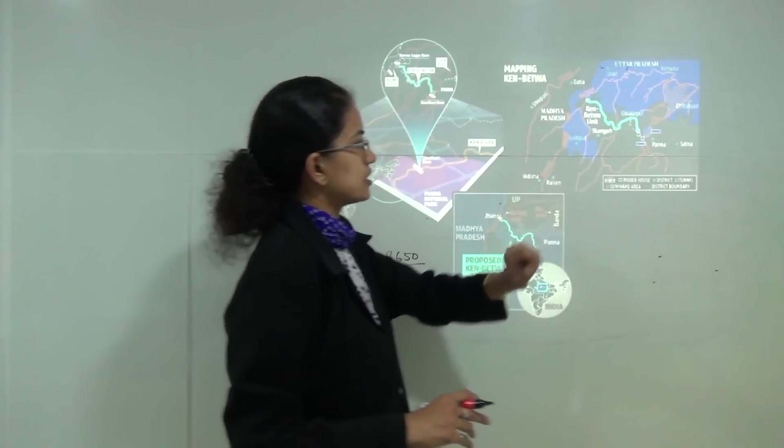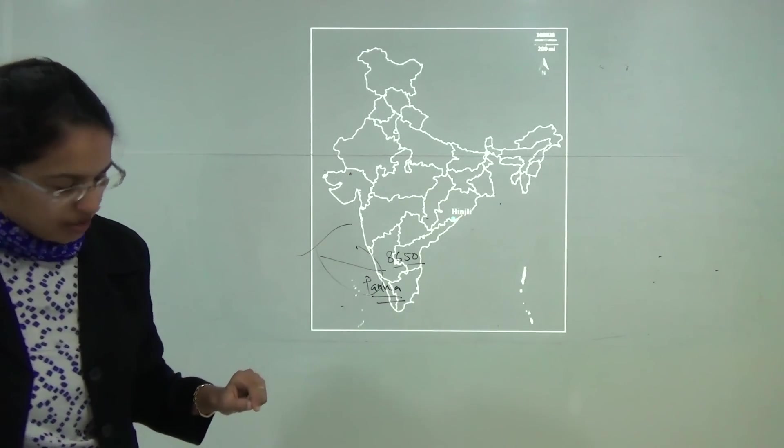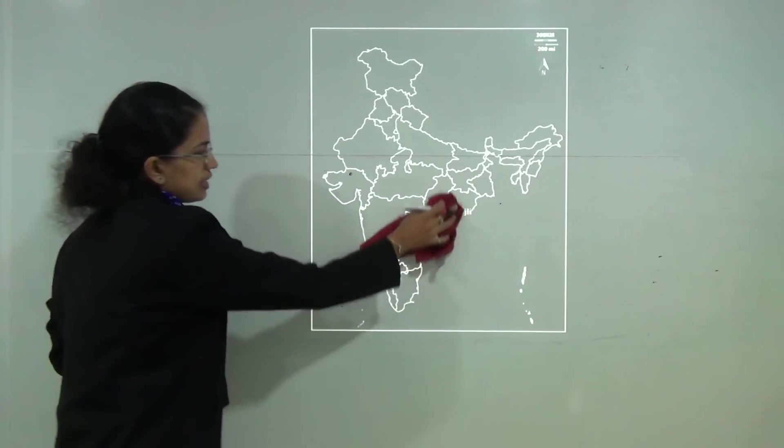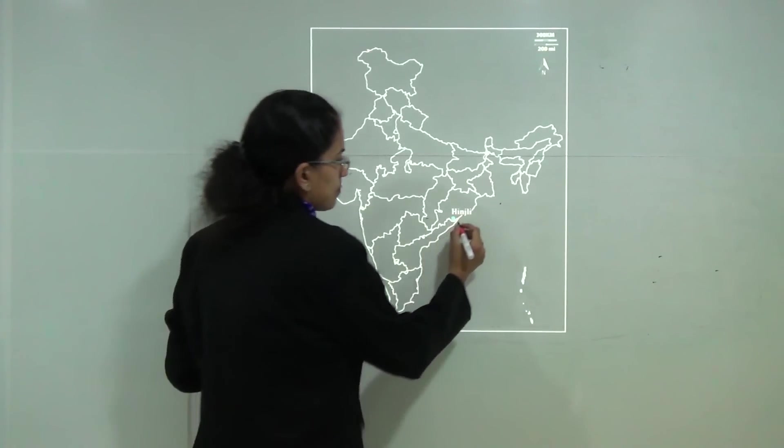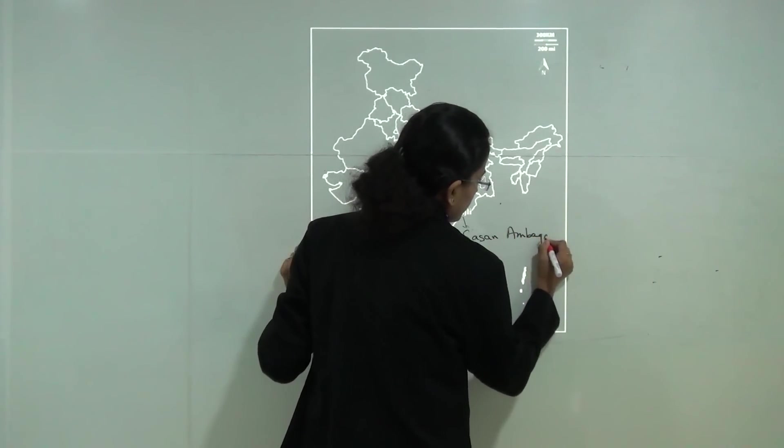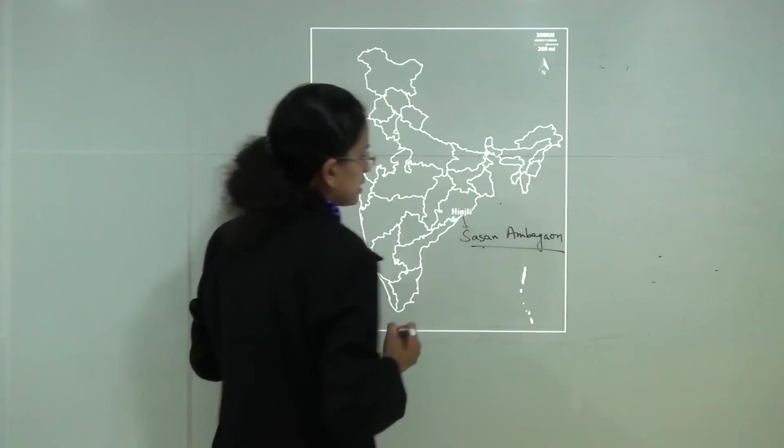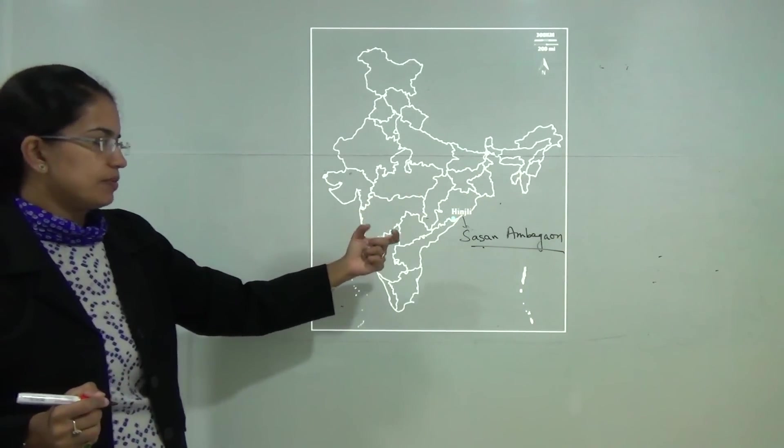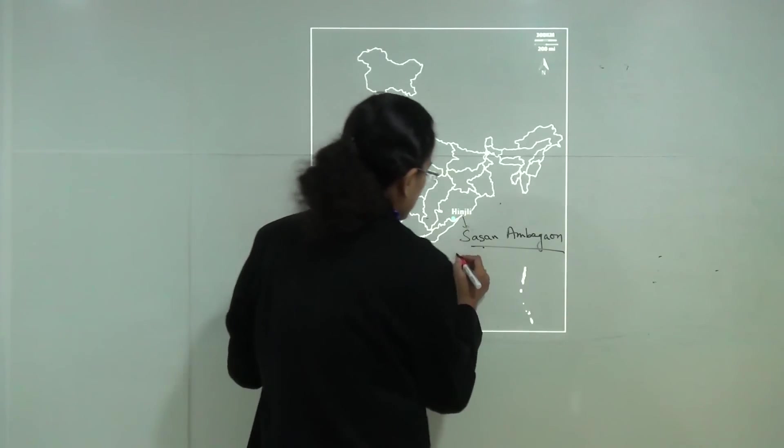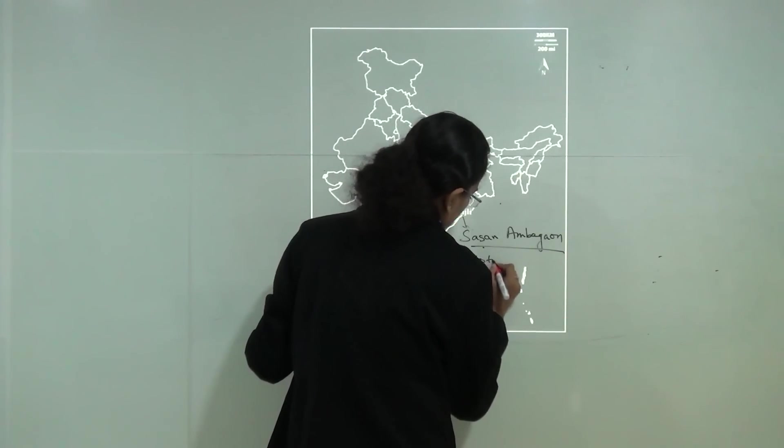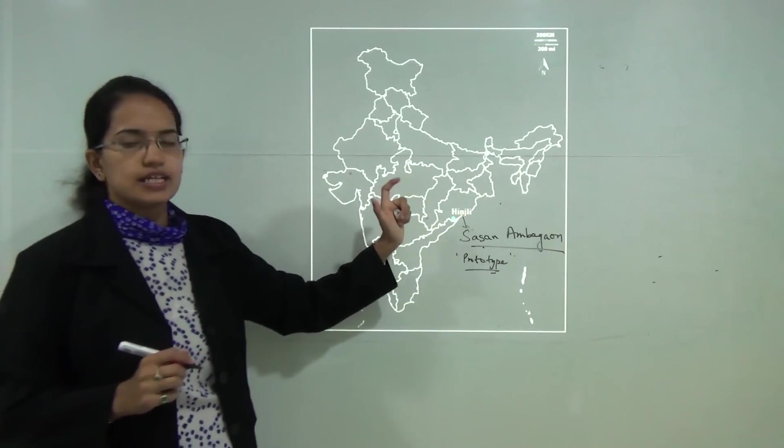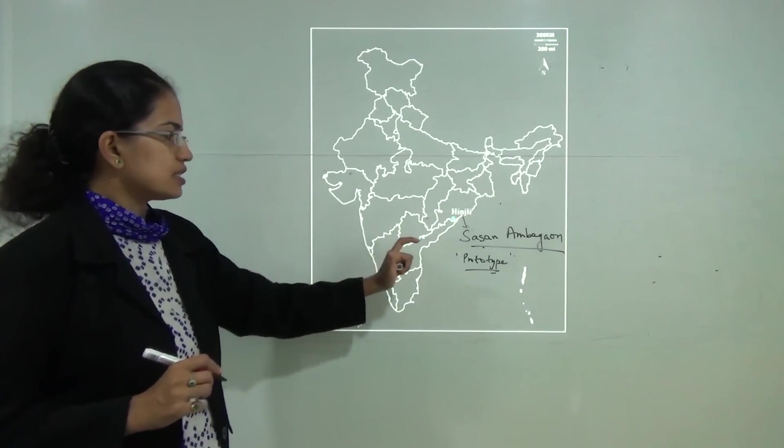The next is Hinjali. Hinjali lies in Odisha and in Hinjali there is another village which is known as Sasan Ambagao. And this Sasan Ambagao village was in news recently because it would be launched as Odisha's Adarsh village or a kind of prototype village I would say. It was again in news and is an important location, Hinjali in Odisha with the Sasan Ambagao village.